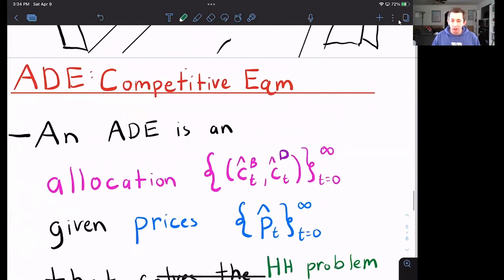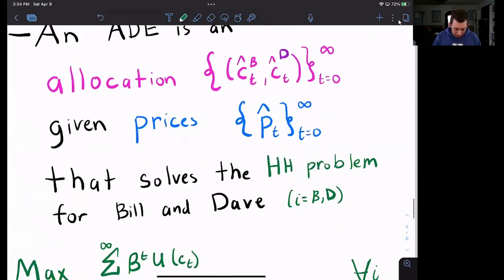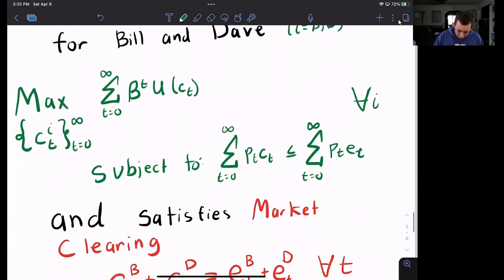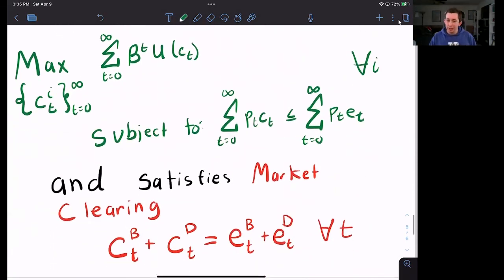So it's got to solve the household problem for both Bill and Dave. The household problem is the utility maximization subject to their budget constraint. And it also has to satisfy market clearing from that definition of competitive equilibrium. What is market clearing here? Market clearing means that every coconut that drops on the ground in one period has to be eaten.